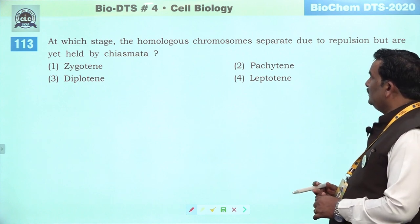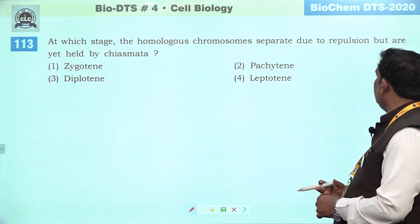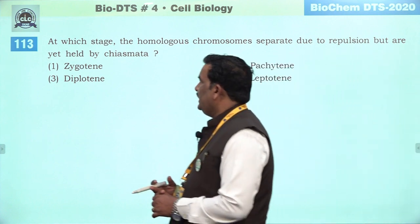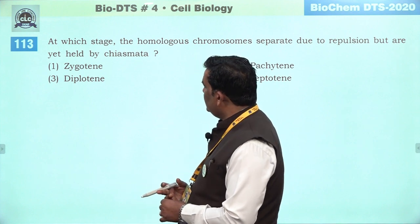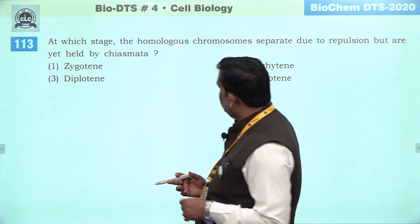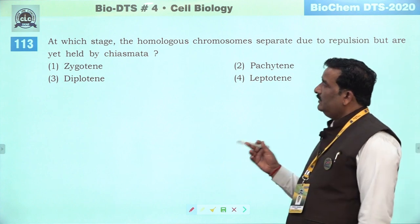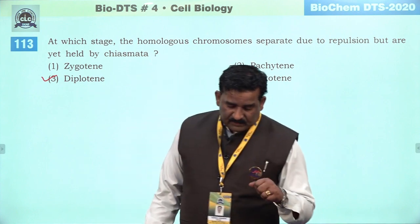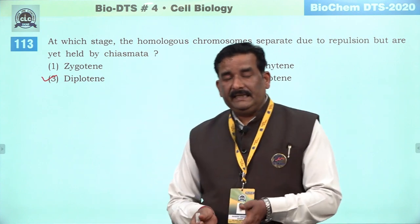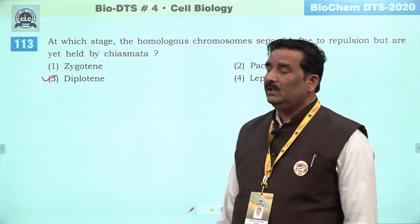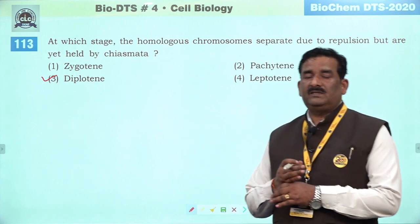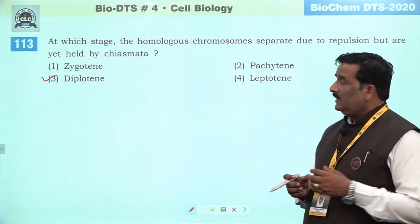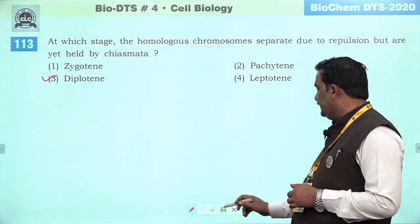Next question: at which stage the homologous chromosomes separate due to repulsion but are yet held by the chiasmata. NCRT mein information hai — yeh kaam diplotene phase mein hota hai kyunki wahan par synaptonemal complex dissolve ho jaate hain, still crossing over ke through jo attached non-sister homologous chromatids hain woh abhi bhi chiasmata mein atke ke zariye jude rehte hain. Third is the right answer.